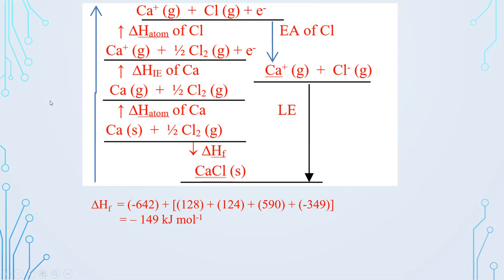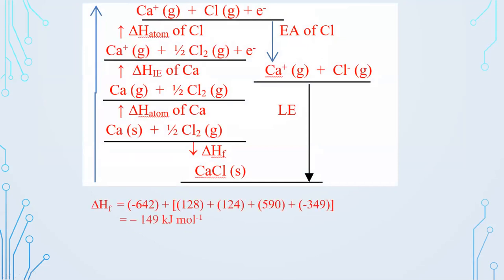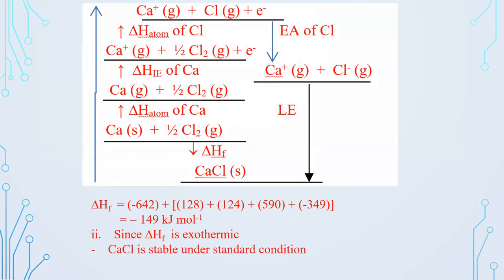Part 1b2: comment on the stability of CaCl. Because ΔH_formation is negative (−149 kJ/mol), CaCl is stable under standard conditions. No further questions, so we continue to the next question.